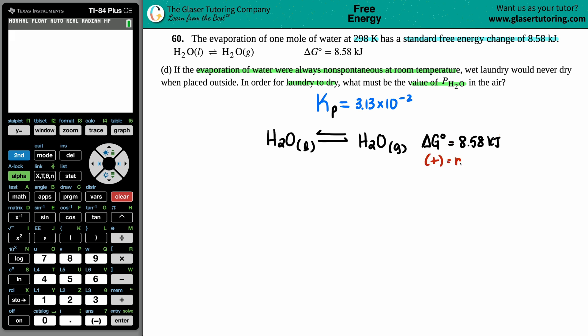Anytime that you see a delta G that's positive, that means that it's not spontaneous. In other words, we need an external amount of energy to push this reaction forward.